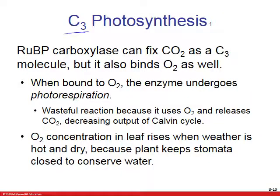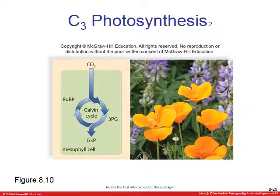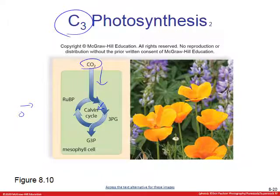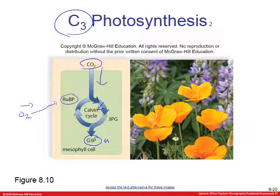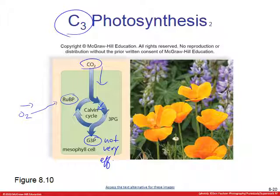Many plants carry out C3 photosynthesis — this is the normal type. The problem with C3 is that it's not very efficient in hot, dry conditions. Some plants have made modifications to photosynthesis to make it more efficient for their environment. In hot climates, oxygen produced from water splitting can bind RUBP, making G3P production inefficient.